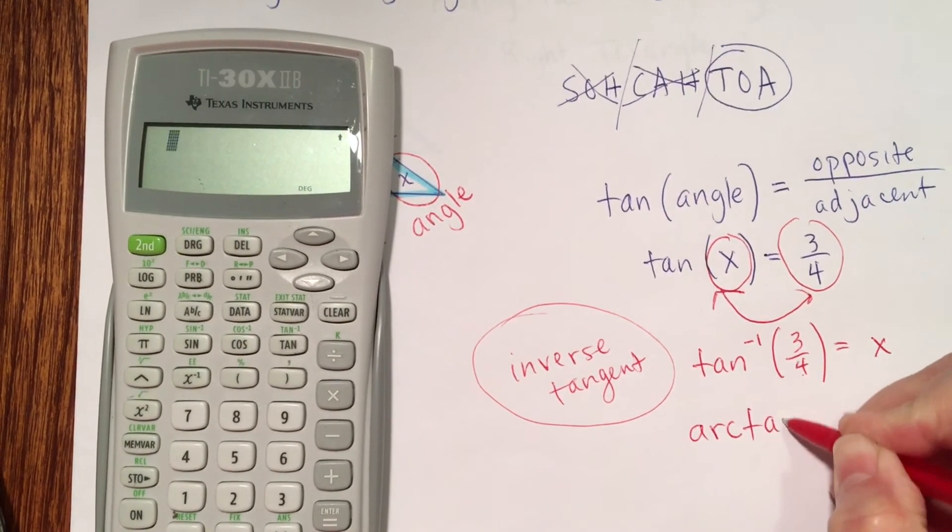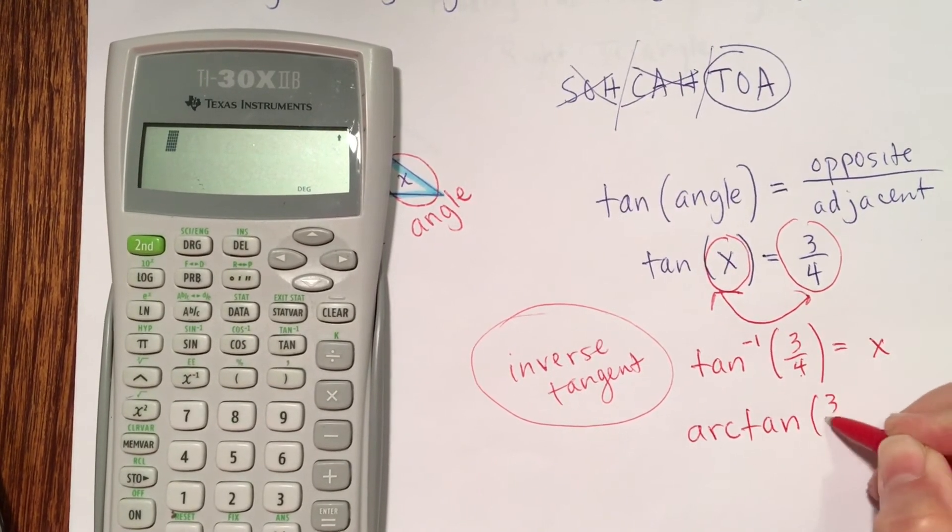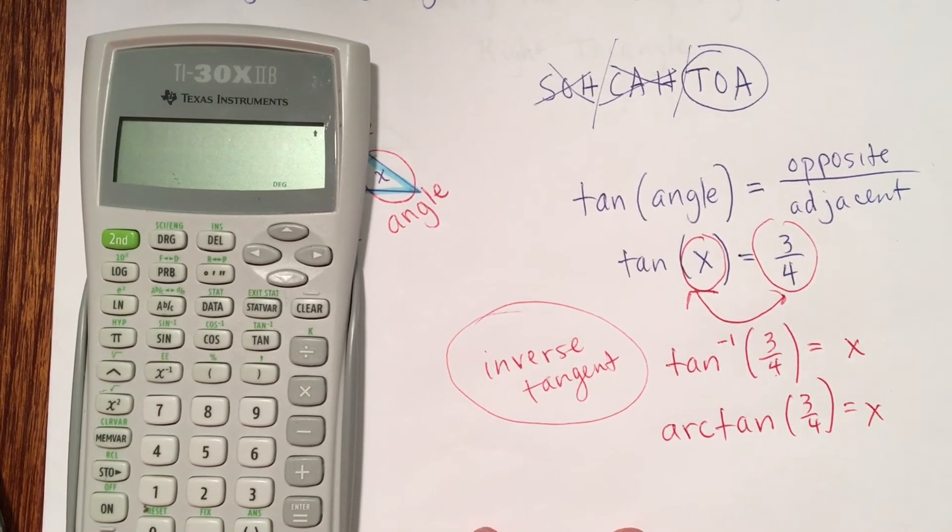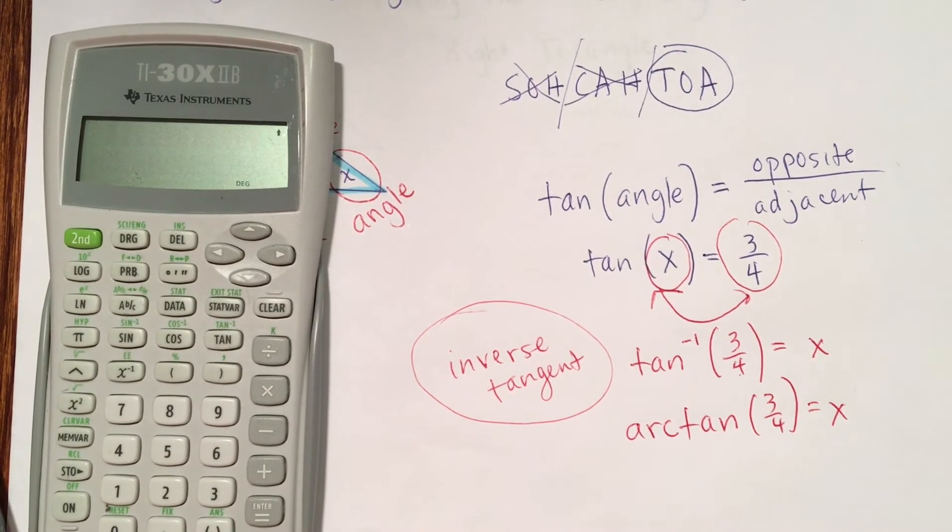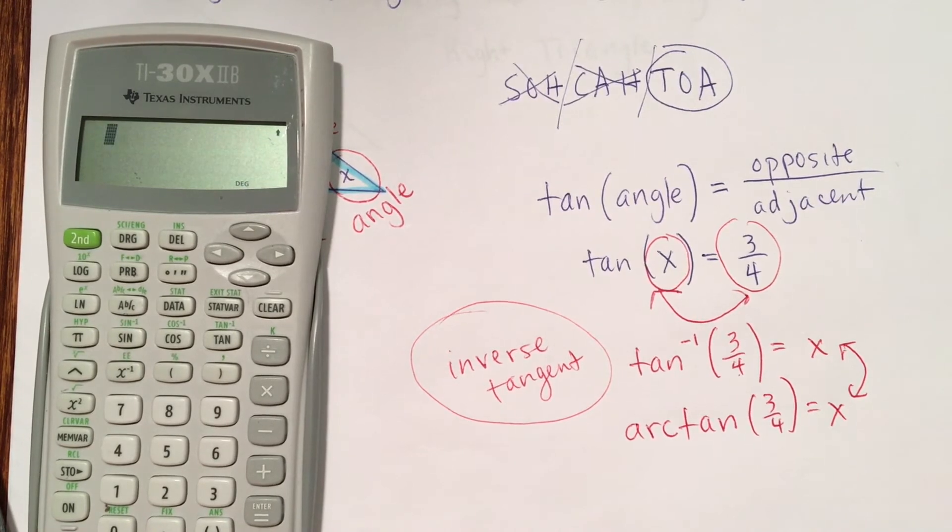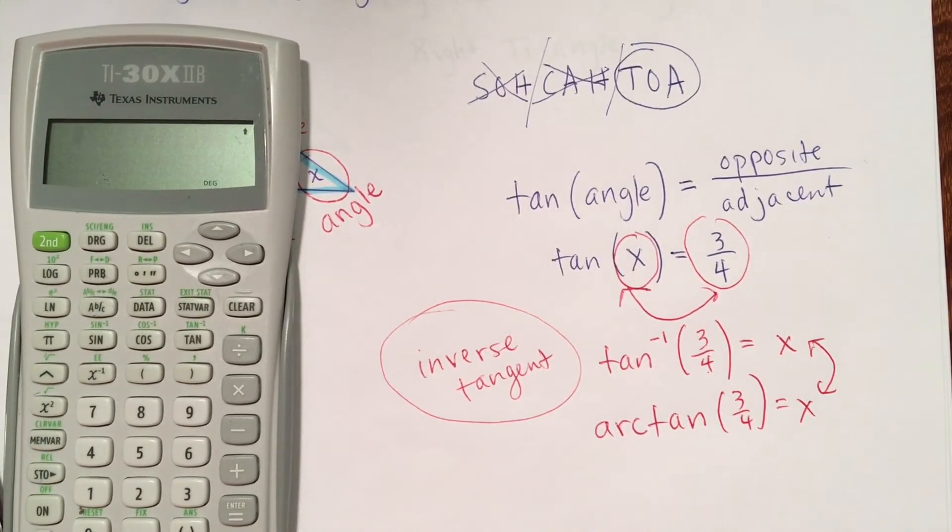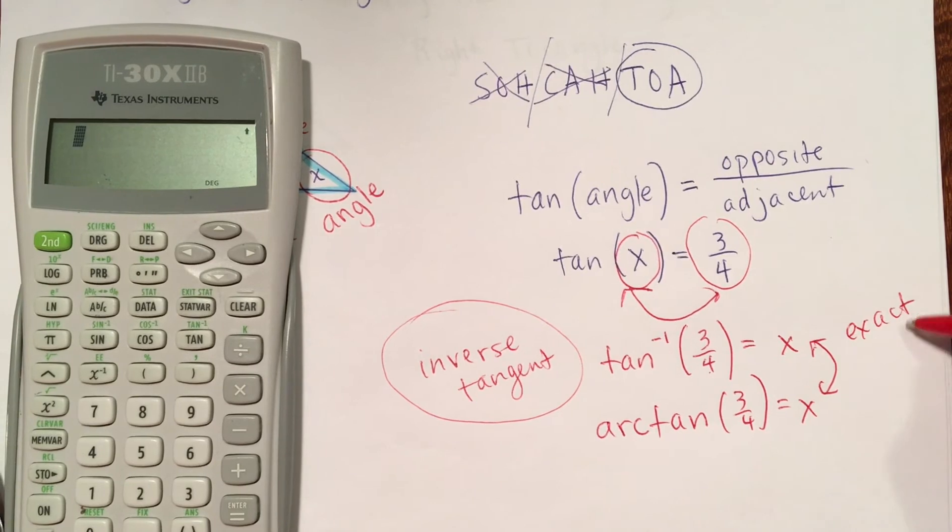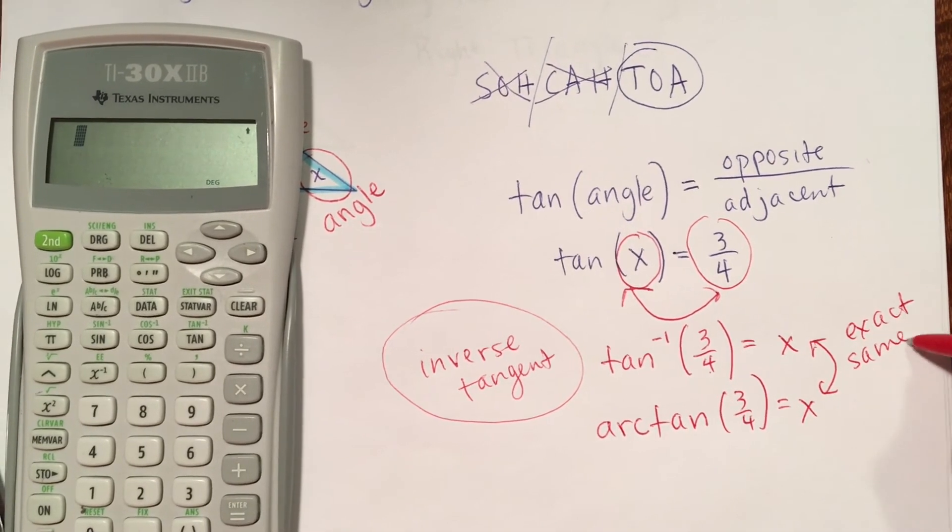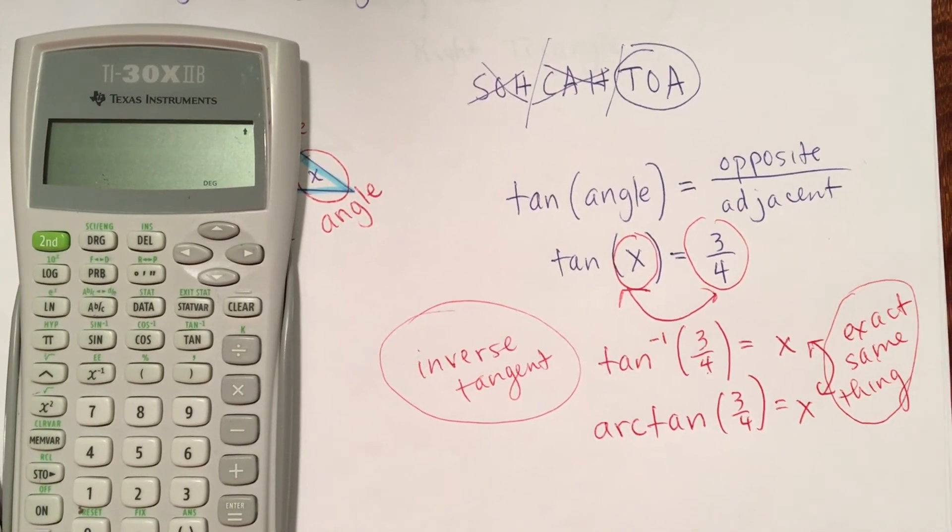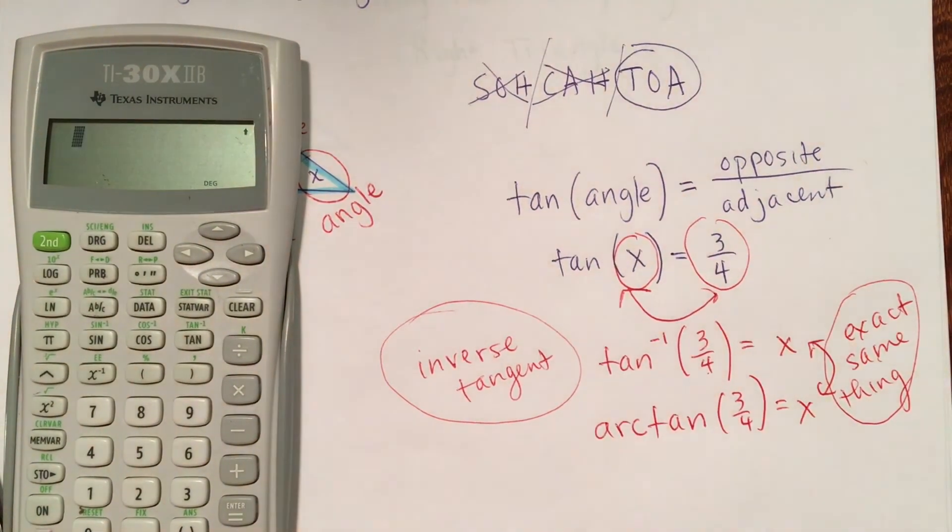I'm going to write out that. Arctan 3 fourths equals x. These two expressions, they are the exact same thing. It's just two different ways to write inverse tangent. I usually just go inverse tangent and keep going with the problem. So, let me write though. These are the exact same thing. So, you pick the one you decide you're going to write and write it that way.